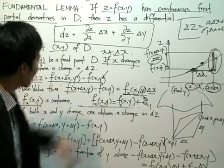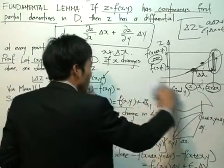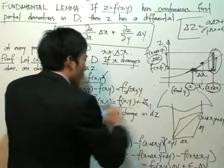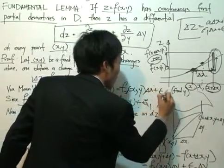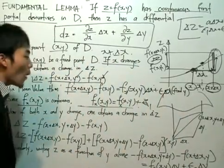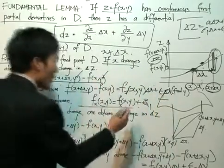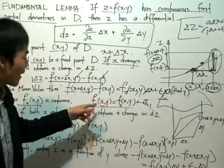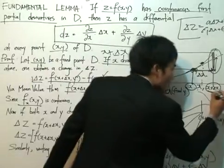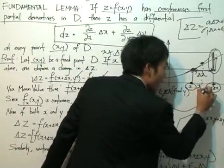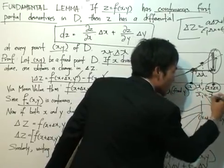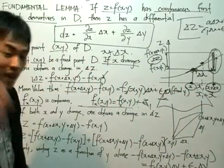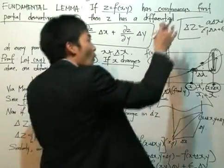Substituting back, what I ultimately get is: the partial derivative of f with respect to x evaluated at (x, y), multiplied by delta_x, plus epsilon_1 multiplied by delta_x. Notice that epsilon_1 — defined as the difference of the two partial derivatives — equals 0 as delta x tends to 0, because as delta x tends to 0, x₁ gets closer and closer to x. When that happens, the partial derivatives at these two points are equal, so epsilon_1 tends to 0. This satisfies our conditions for the total differential to exist.